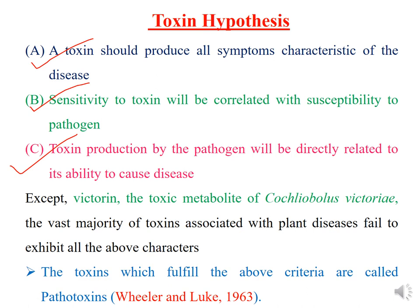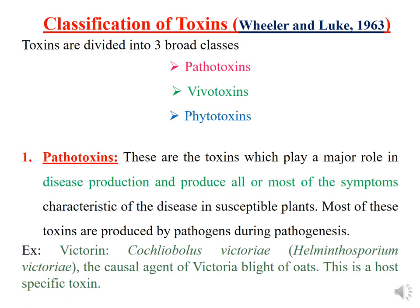If a toxin fulfills these three criteria, it can be called a pathotoxin. Coming to the classification of toxins: Wheeler and Luke in 1963 classified toxins into three broad categories — pathotoxin, vivotoxin, and phytotoxin. Pathotoxins are toxins which play a major role in disease production and produce all or most of the symptoms characteristic of a particular disease in a susceptible plant. Pathotoxins are produced in the susceptible host plant only, and most are produced by pathogens during pathogenesis. These are host-specificity toxins. An example is victorin, a specific toxin produced by Cochleobulus victoriae, the causal agent of victorial blight of oat.